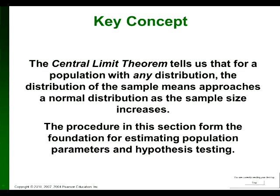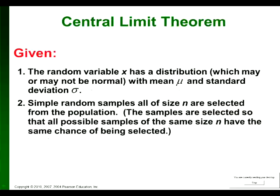The procedure in this section forms the foundation for estimating population parameters and hypothesis testing, which starts in Chapter 7. The central limit theorem requires simple random samples of size n from the population, meaning all possible samples of the same size n have the same chance of being selected — that was our definition of a simple random sample.